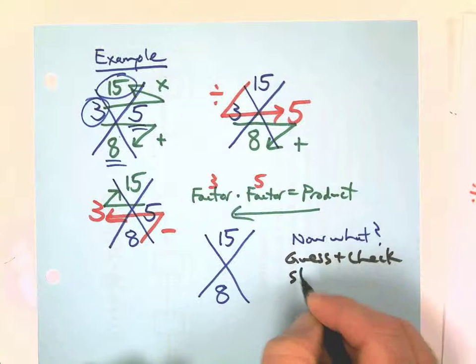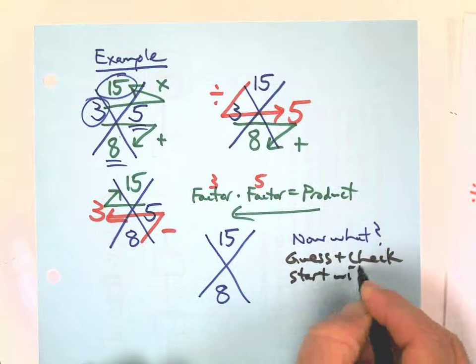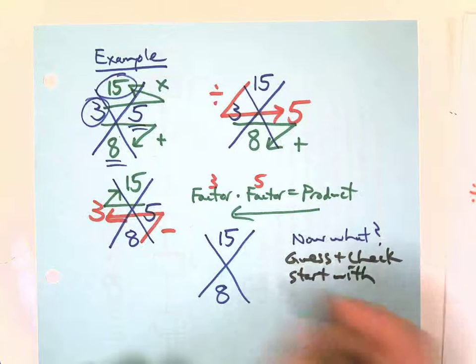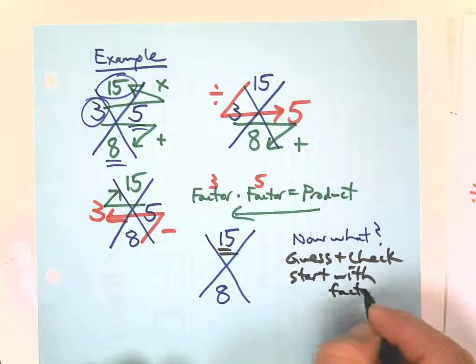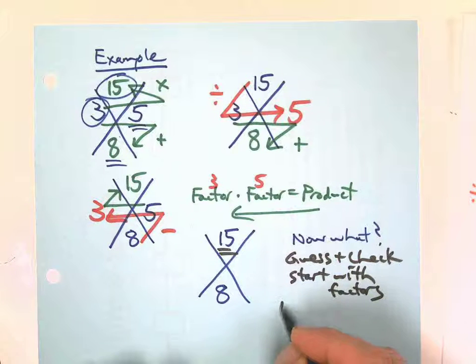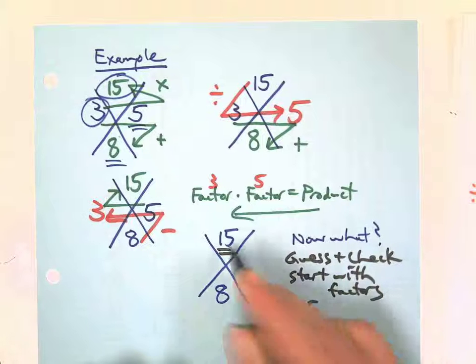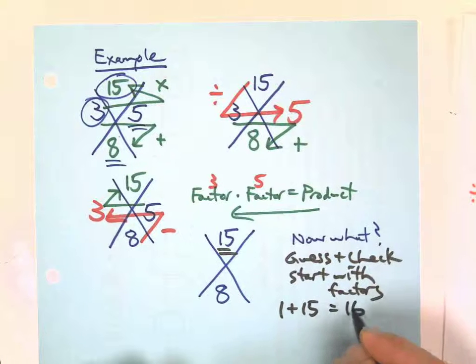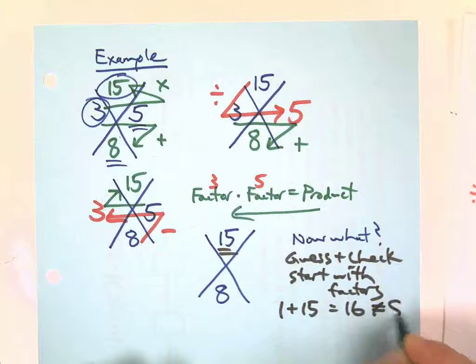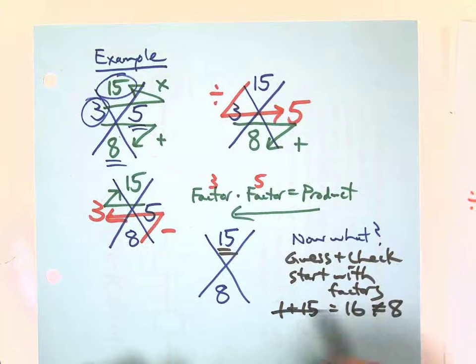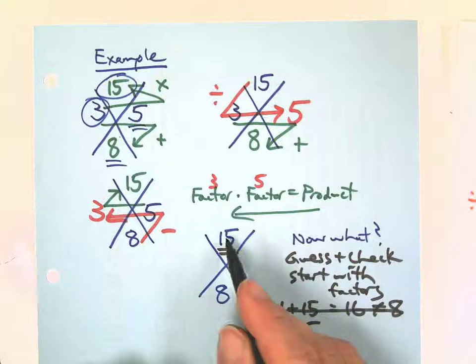So one strategy is guess and check, and you can be smart about your guess and check. You start with factors of 15, so you take the—if you have something like this, take the top number and just start making the factors, right? What if I had 1 and 15, right? Because 1 times 15 equals 15. If I add them, I get 16. 16 does not equal 8, so that's not going to work.